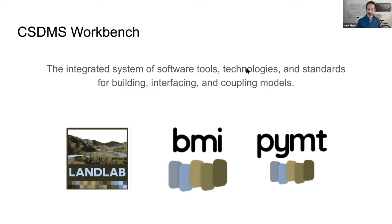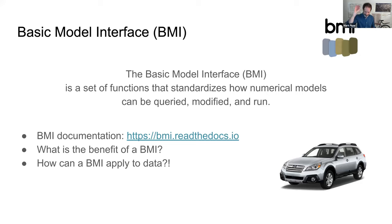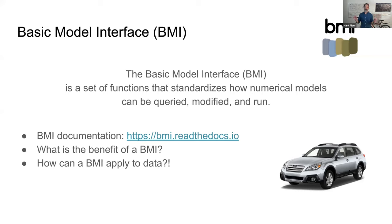BMI is the Basic Model Interface — it is a set of functions. These functions are special in that they have prescribed names, arguments, and return types, and they have the same names and arguments across languages. The idea is that you could write a model with its own interface, but you could also put a BMI on it and have a standardized interface for accessing and running your model.